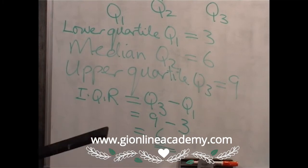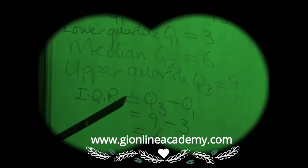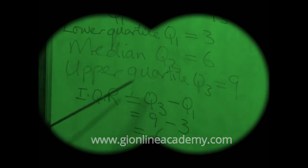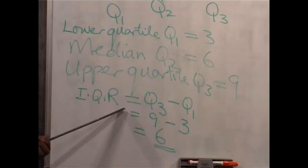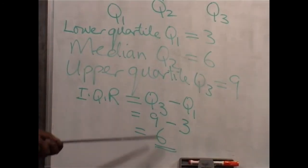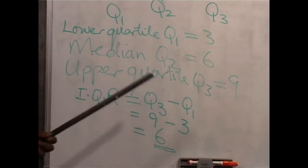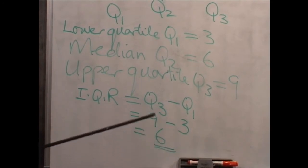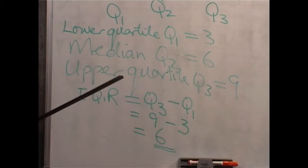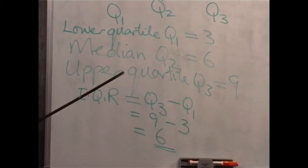If you are asked to find the semi-inter-quartile range, we said the semi-inter-quartile range is half of the inter-quartile range. So the semi-inter-quartile range will be half of 6, which will be 3. And this is how we find the median, lower quartile, and upper quartile.